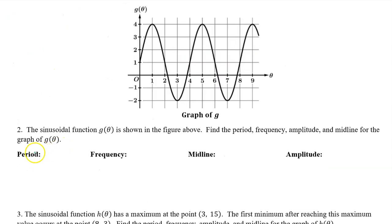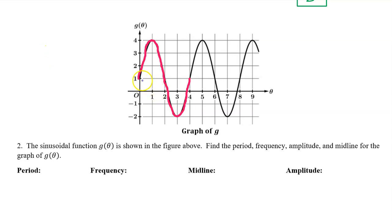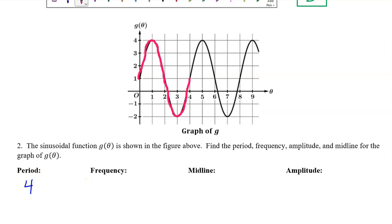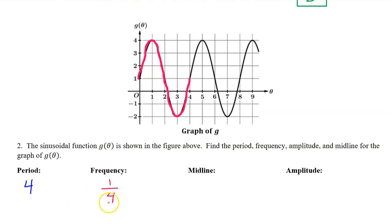Let's do the same thing for number 2. I've highlighted one cycle of the function — it goes from 0 to 4, so the period is 4. The frequency is the reciprocal of the period, so that will be 1 over 4. The midline is the horizontal line halfway between the highest and lowest values. In this case, the midline is y equals 1.